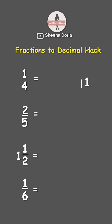So that's 1 divided by 4. Since 1 is smaller than 4, we need to add 0.0 there. So 10 divided by 4 is 2. So you need to put the decimal point in the answer, while 2 times 4 is 8. Now 10 minus 8 is 2.